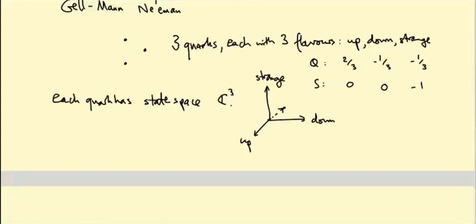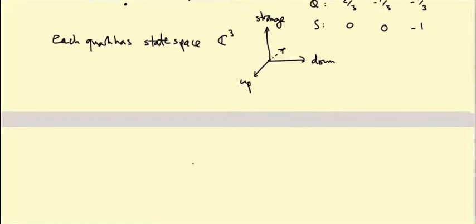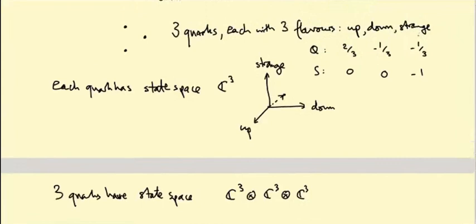Okay, so each quark has a three-dimensional state space. So if you have three quarks, the way you figure out the state space for the combination is you take the tensor product. So three quarks have the state space C3 tensor C3 tensor C3. That's just a general fact about quantum mechanics. If you have two systems, each with state space V and W, then to get the state space of the combination, you just tensor them together. Now, the fact that the strong force doesn't know the difference between these three quarks means that there's a symmetry of this three-dimensional state space, and the proposal was that this should be an SU(3) flavor symmetry.